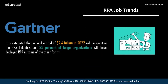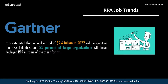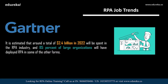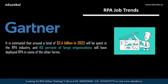According to Gartner, around 2.4 billion US dollars is estimated to be spent in the field of RPA by 2022, and 85% of large organizations will have deployed RPA in some form. All industries are looking for professionals who can adapt RPA technology quickly and automate manual tasks, so RPA jobs will definitely increase.